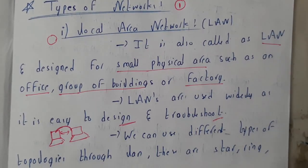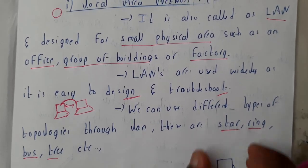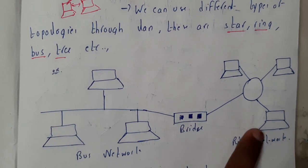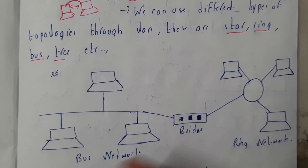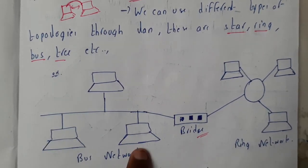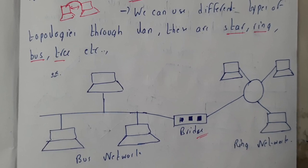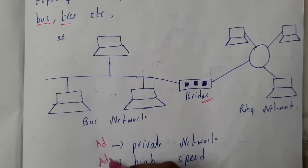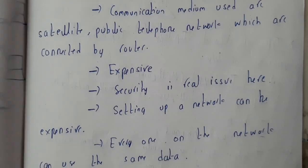Using that LAN wire, we can establish a network in our house itself. We can use different types of topologies like star, ring, bus, and tree — we will go through topologies in future lectures. For example, multiple devices on a single path form a bus topology, while a circular connection is called a ring topology. The advantages of LAN include a private network and very high speed — the data transfer rate is almost 60 to 70 Mbps using a LAN wire.